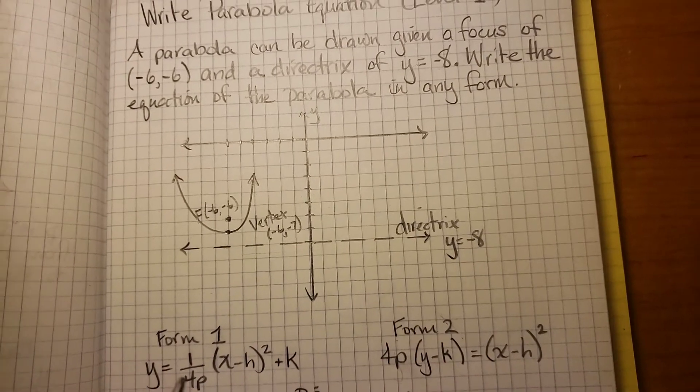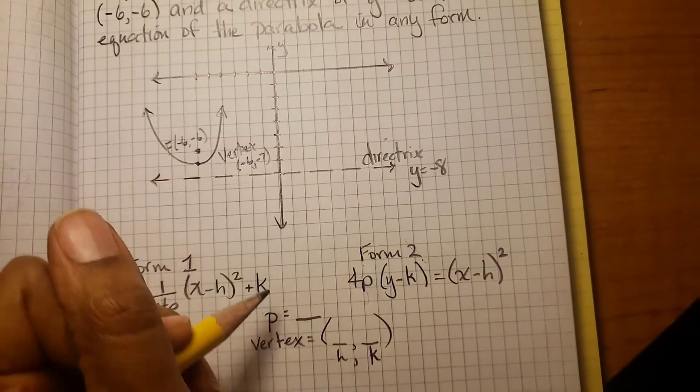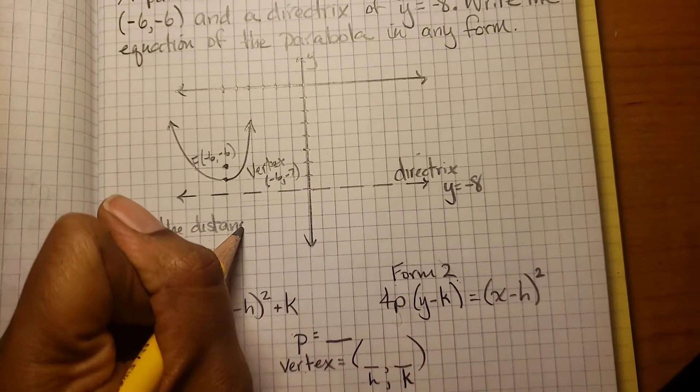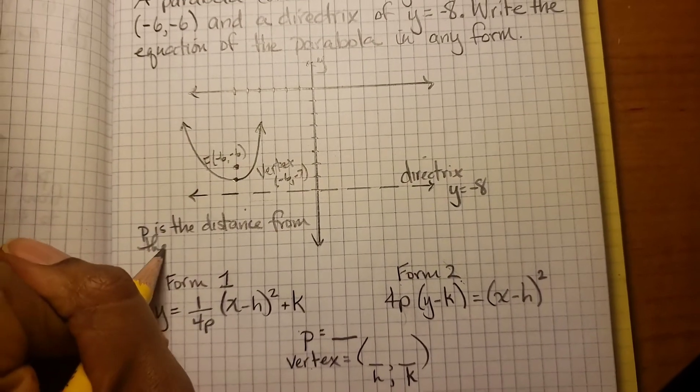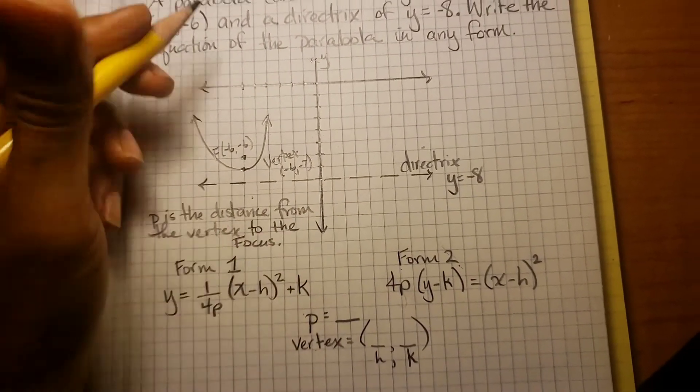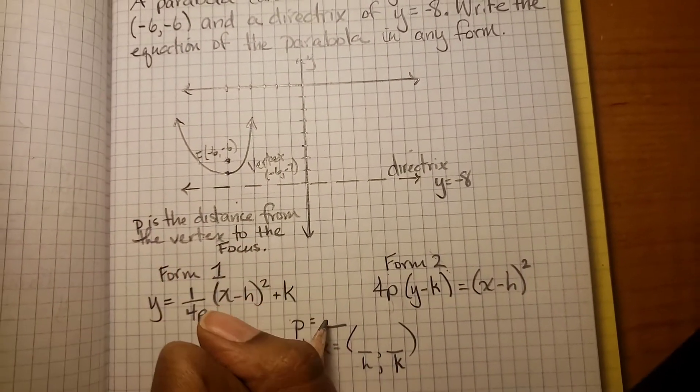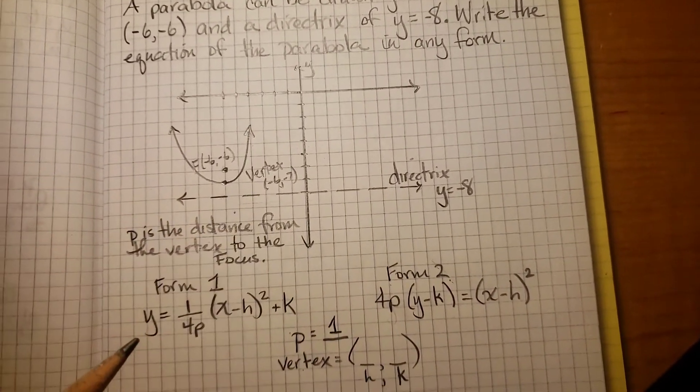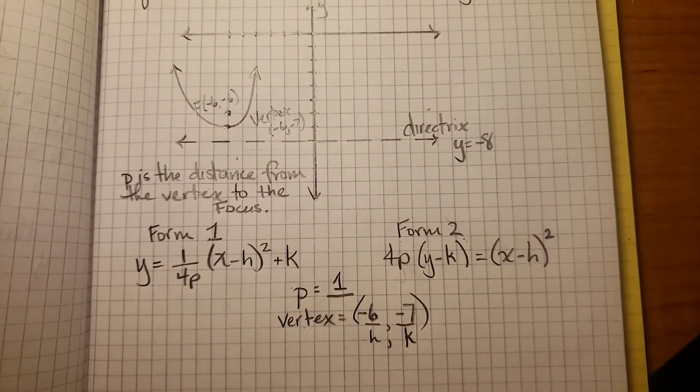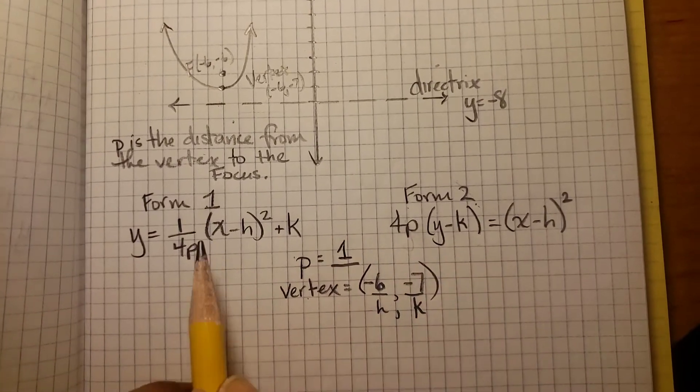We also need p. We need p and the vertex to write the equation. So p is the distance from the vertex to the focus. Because we're going up to get to the focus, p is positive, and it is positive 1. We got the vertex, (-6, -7). And now we can plug these values into either one of these forms and we'll get our equation.